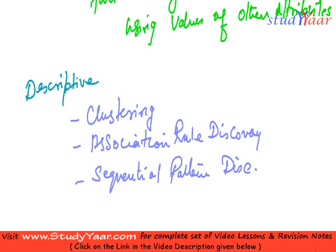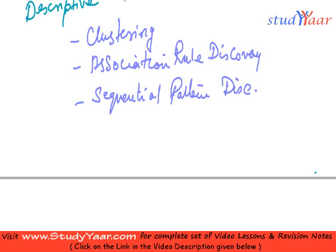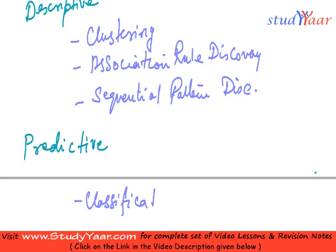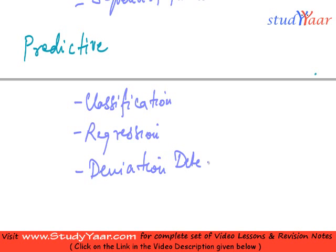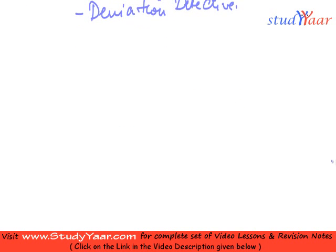The next category is predictive. What do we have in predictive tasks? I have classification, I have regression, and I have deviation detection. So these are my predictive tasks. Now let us see each one of them, one by one.